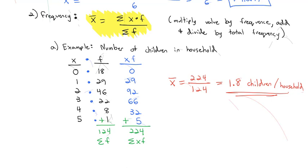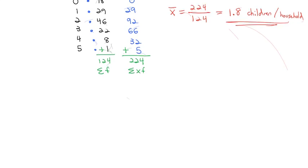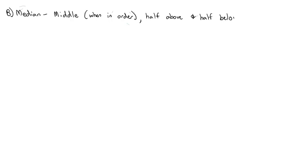However, I told you the mean is just one of three ways to find the center of the data. Let's take a look at the second definition of center. The second definition of center is what we're going to call the median. The median is the one that is in the middle when in order.